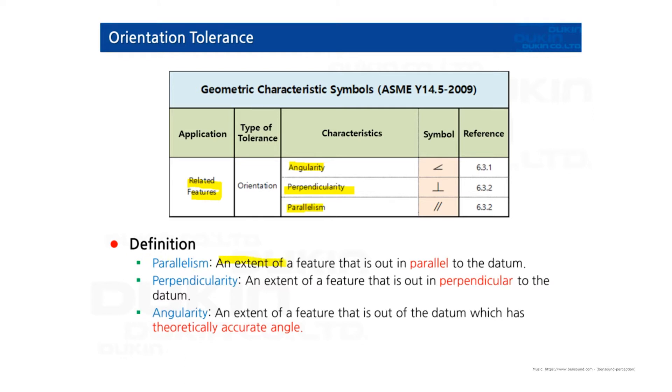Parallelism: an extent of a feature that is out of parallel to the datum. Perpendicularity: an extent of a feature that is out in perpendicular to the datum. Angularity: an extent of a feature that is out of the datum which has a theoretically accurate angle.